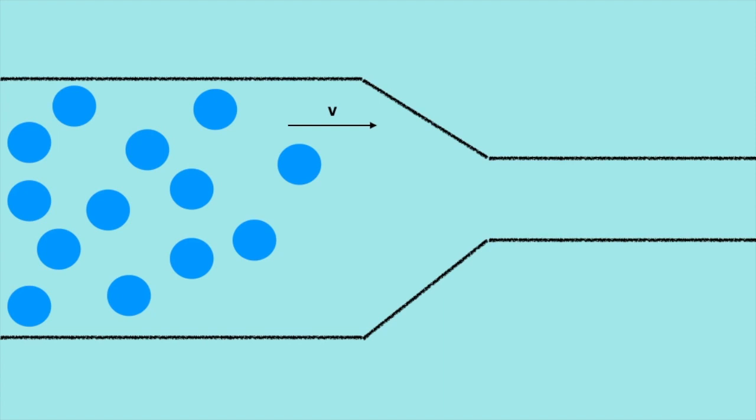Air particles are not static, so they won't be moving in a straight line to the right. These air particles are actually constantly in random motion, and this random motion gives the air its temperature. But together, the random motion will cancel out, and the hair dryer exerts a net force on the air particles.